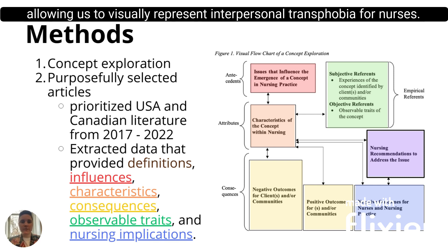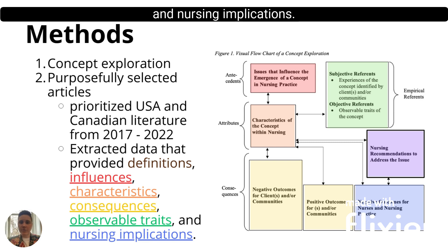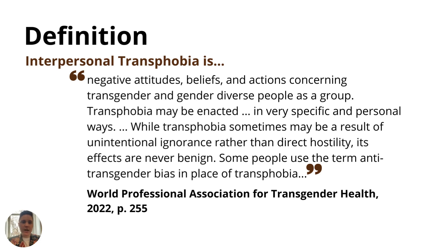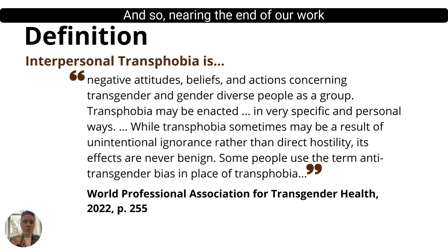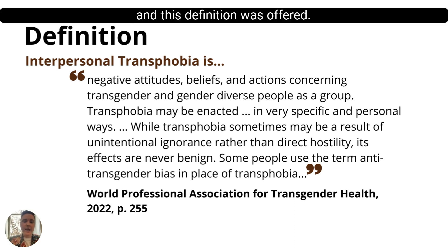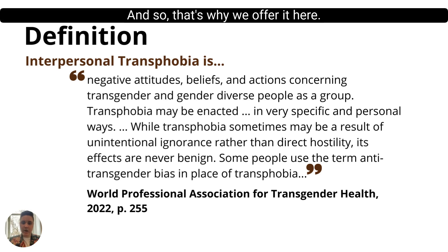Our concept exploration purposefully selected 24 sources, allowing us to visually represent interpersonal transphobia for nurses. We prioritized literature from Canada and the US and looked for several pieces of information such as the influences, consequences, and nursing implications. We found about seven explicit definitions, though they weren't specific to interpersonal transphobia or to nursing per se. Nearing the end of our work, WPATH released their newest guidelines, and that definition was offered. While no single definition was fully representative of interpersonal transphobia, WPATH's definition is in alignment with our findings, which is why we offer it here.